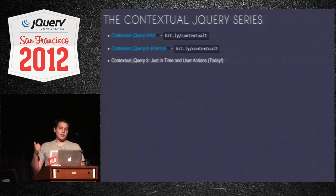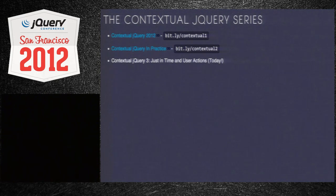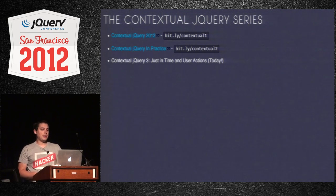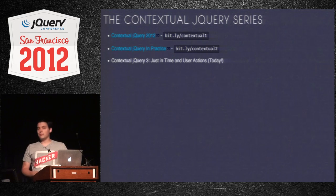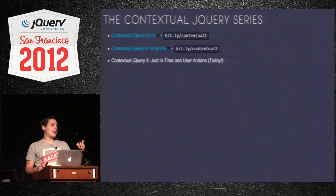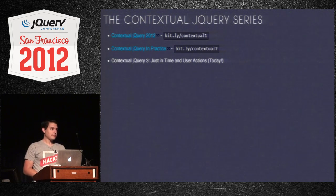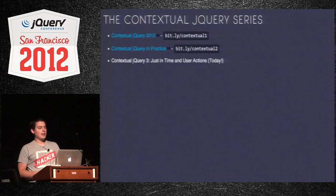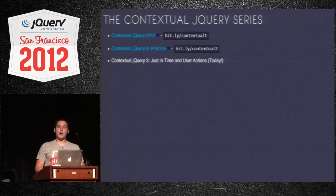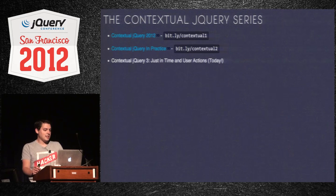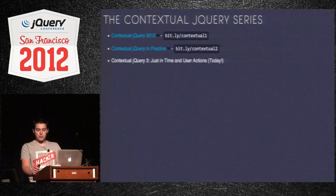So the contextual jQuery series: there's a video for the most updated version of the first part at jQuery UK — that's bit.ly/contextual1. I'll post the slides afterwards and tweet them out. Contextual jQuery in practice was back in Boston last year and that overlaps the most with what I'm going to cover today. The third part in this series is just-in-time — basically initialization and then user action. That's what we're going to cover today.